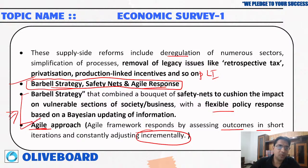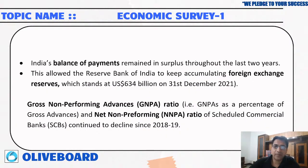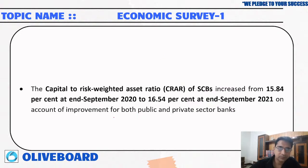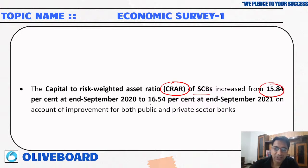India's balance of payments remains in surplus. Foreign exchange reserves stood at US dollar 634 billion as on 31st December — please update yourself with the latest data. Gross non-performing advances ratio and net non-performing ratio have continued to decline. The capital-to-risk-weighted asset ratio, CRAR, of scheduled commercial banks has increased from 15.84 percent to 16.54 percent by September. A higher CRAR means a better cushion for scheduled commercial banks.